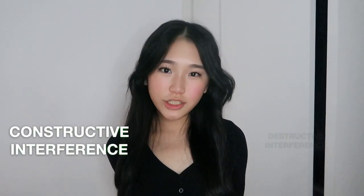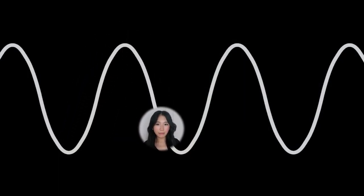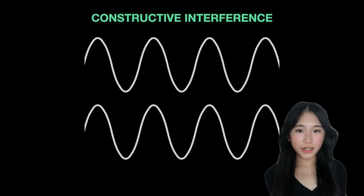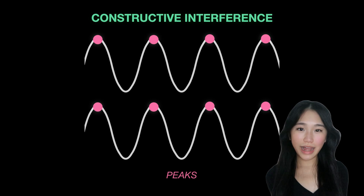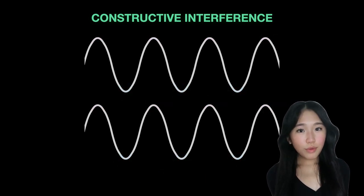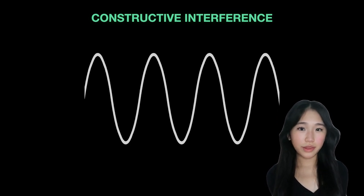These waves interfere either constructively or destructively which depends on their relative phases, which is the position of a point in time of a wave cycle. Constructive interference occurs when the peaks of one wave align with the peaks of the other wave or the troughs align with the troughs. When this happens the amplitudes of the waves add up resulting in a wave with larger amplitude.